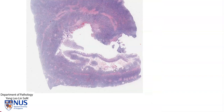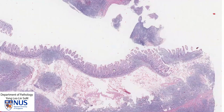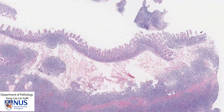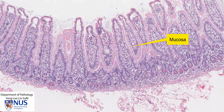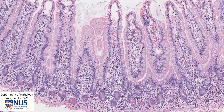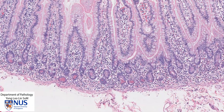Let's first take a look at some recognisable normal structures. Here we have the small bowel mucosa. We can recognise the finger-like villi, and these villi are lined by tall columnar cells with some interspersed goblet cells. Normally, we do see some lymphocytes and plasma cells in the lamina propria, so this is normal and is not part of the lymphoma.